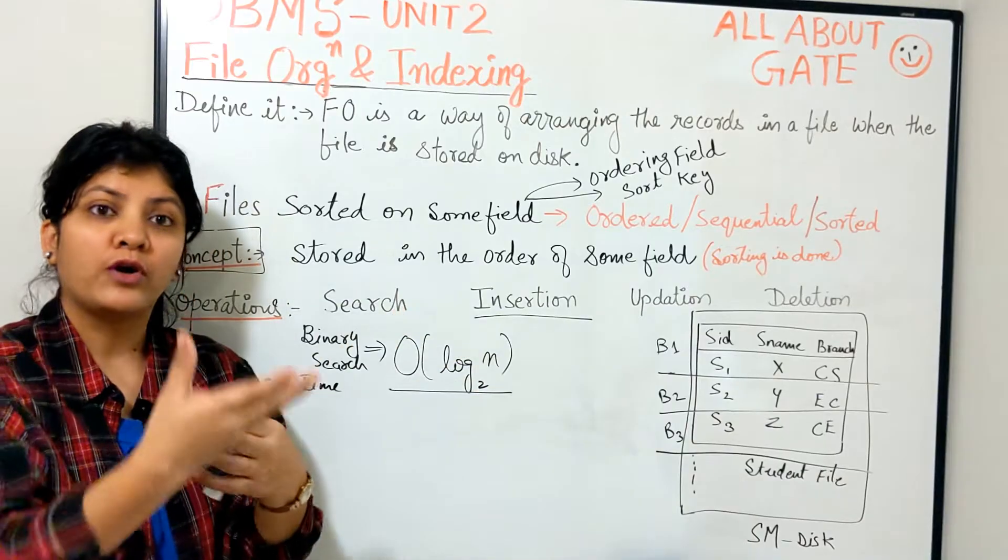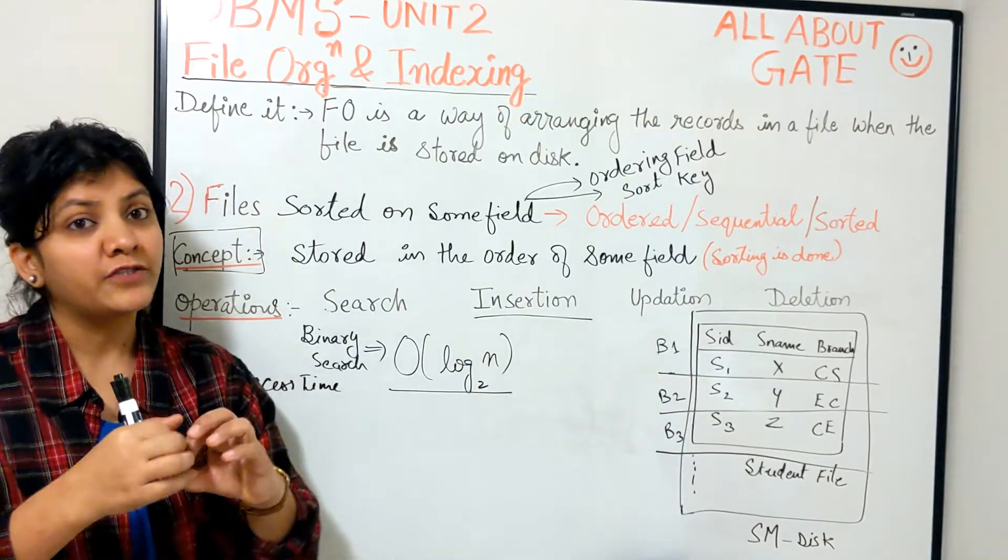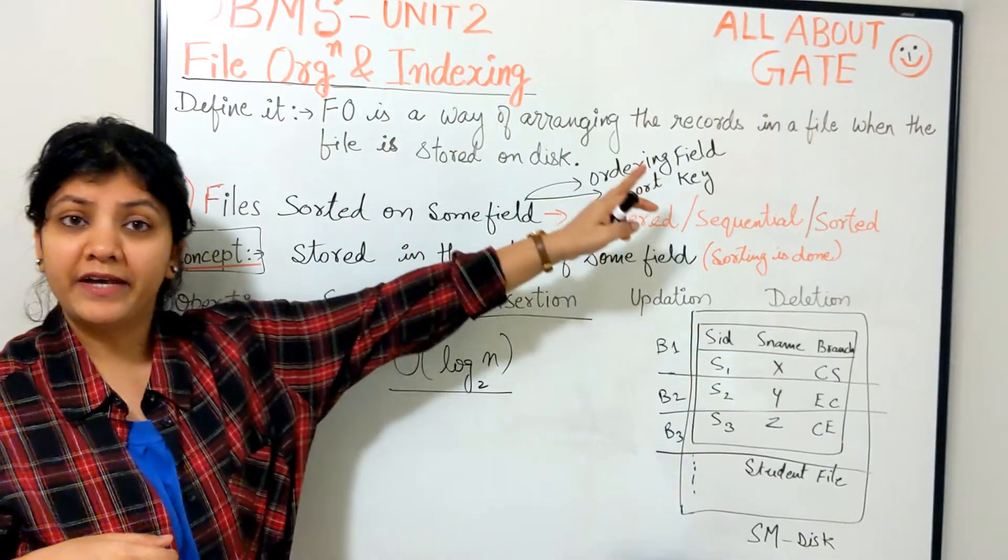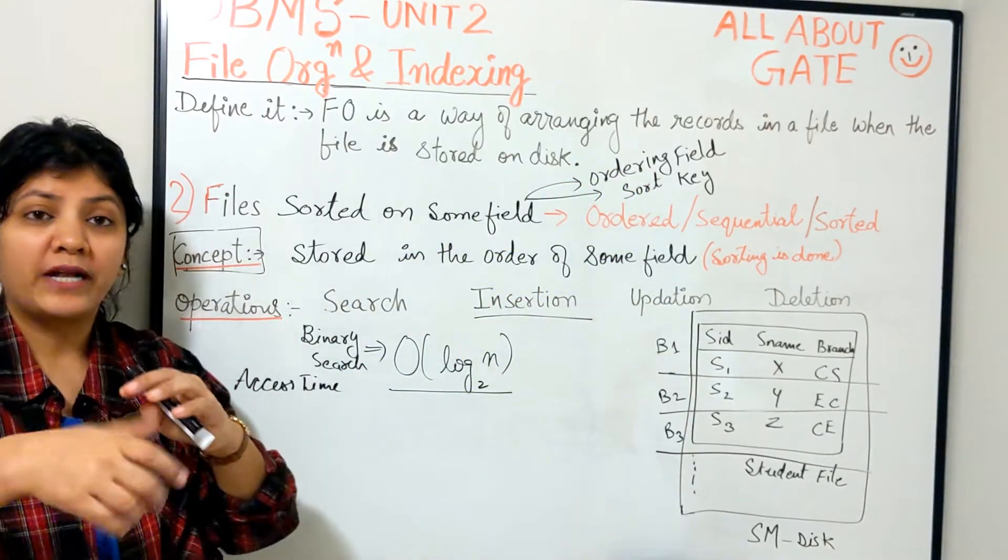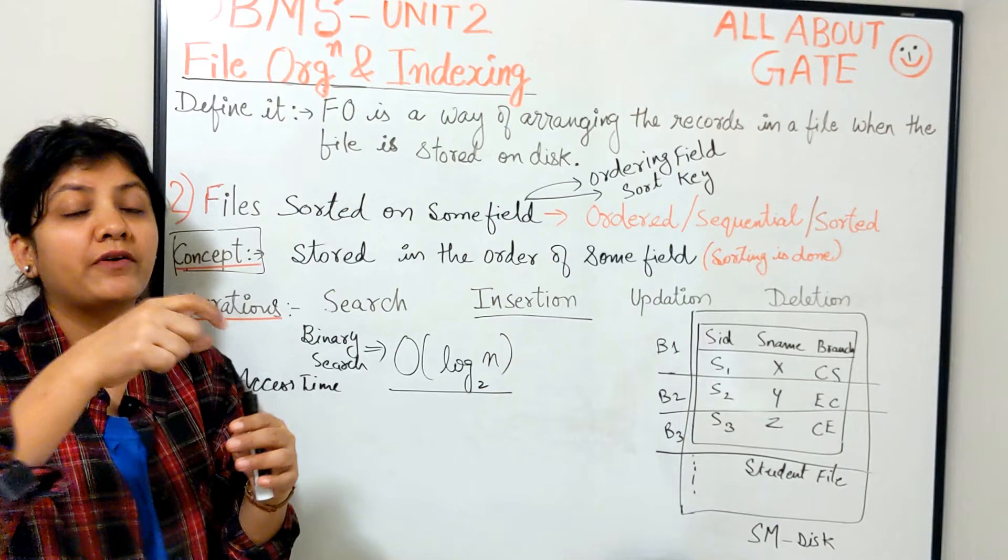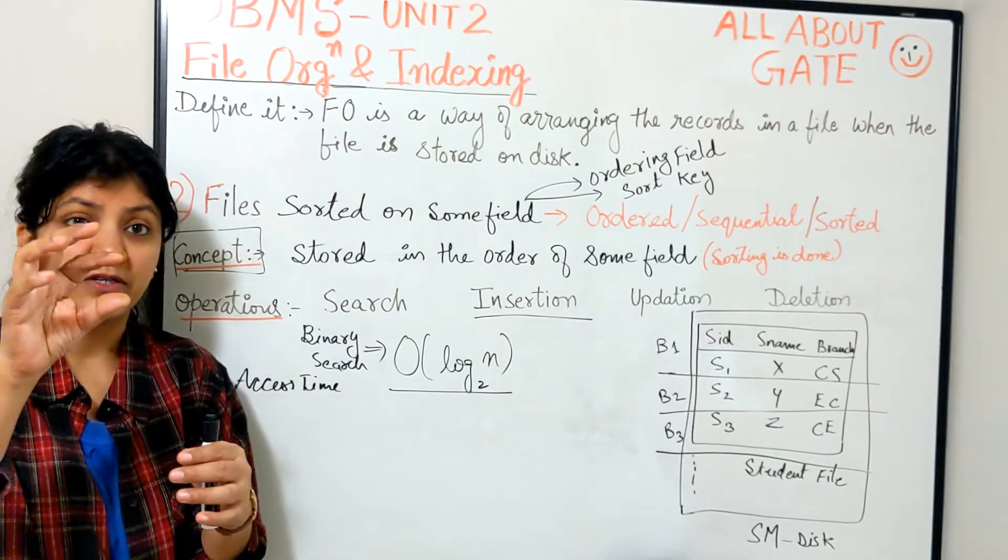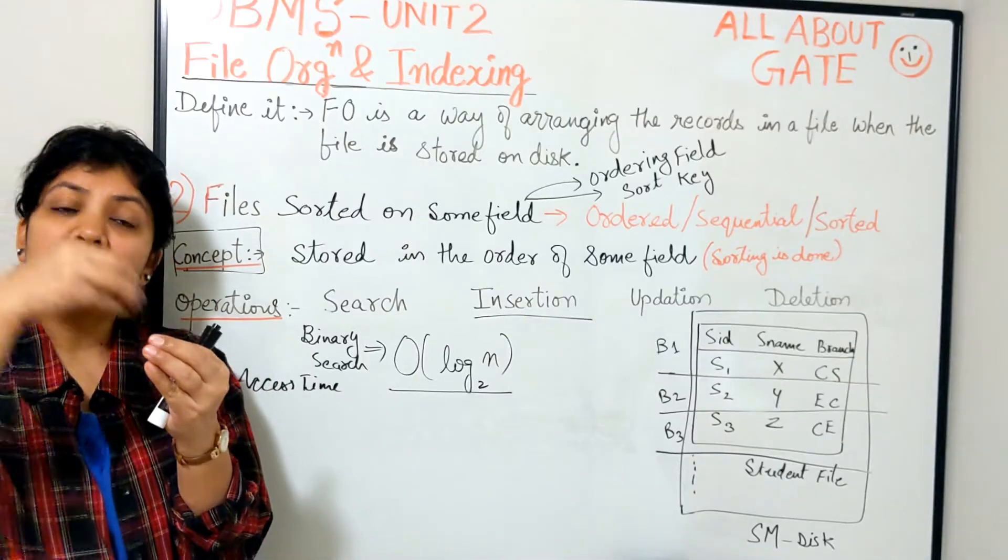That field we will choose and we will apply a hash function on it. So here how you are going to find out the location for a record to get stored, the block number, how will you know that in which block which record should go? We will apply some hash function on the some field, whatever ordering field we are selecting.